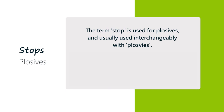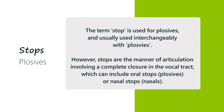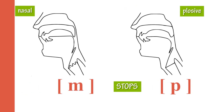Some phoneticians use the word stop instead of plosive, and actually use them interchangeably. However, stops technically refer to any manner of articulation involving a complete closure in the vocal tract, which can include oral stops — which are plosives — as well as nasal stops, which are nasals. So nasals could technically be included under stops, not just plosives.